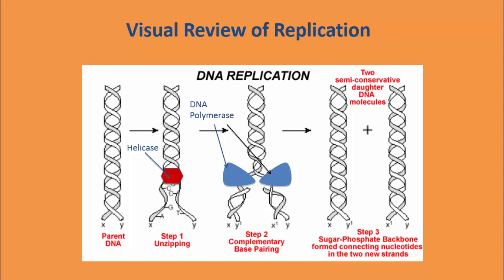Here once more are the steps of DNA replication. We start with the parent DNA strand. Step one: unzipping by helicase. The nucleotides floating in the nucleus each have a sugar and a phosphate group. Step three: they pair up with the original strand. Step four: DNA polymerase binds them. Step five: the sugar phosphate backbone forms. Step six: we get two completed copies from the original one.